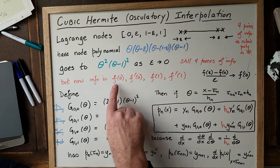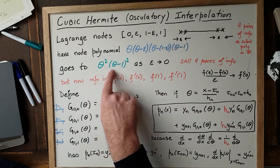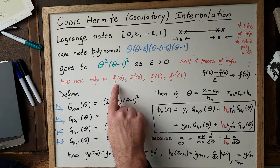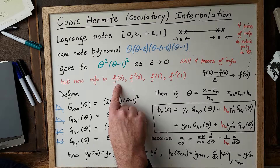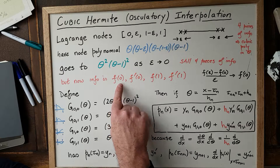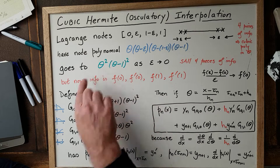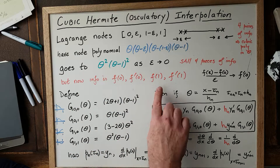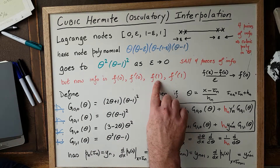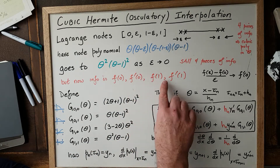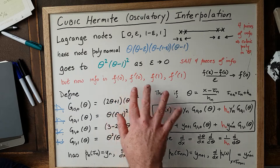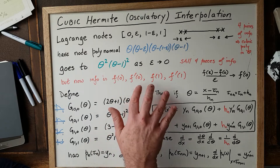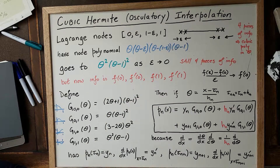So for this node polynomial, the four pieces of information we want are: the value of the function at zero, the value of the derivative at zero, the value of the function at one, and the value of the derivative of the function at one. If we know those four pieces of information, we're still going to be able to determine a cubic.